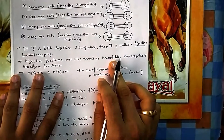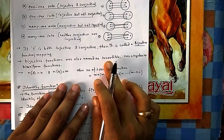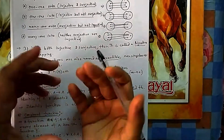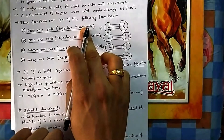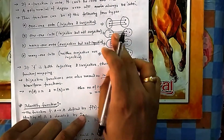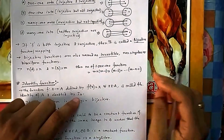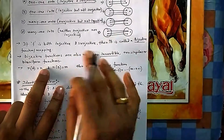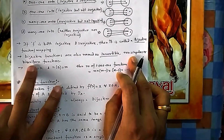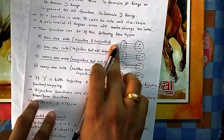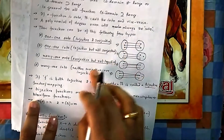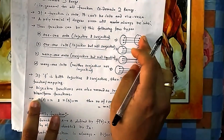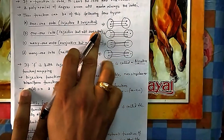If a function is both injective and surjective, it is known as bijective — 'bi' means two, so both adjectives apply. Bijective functions are also known as invertible or non-singular. They are also called bi-uniform because the mapping looks uniform from both sides, unlike non-bijective functions.